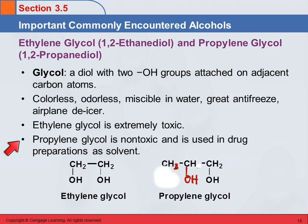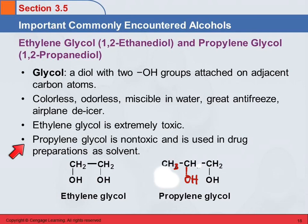Interestingly, just adding one carbon — going from ethylene glycol to propylene glycol — makes it non-toxic. Propylene glycol is really quite safe and is actually used in drug preparations as a solvent. So ethylene glycol: very toxic. Propylene glycol: not at all.